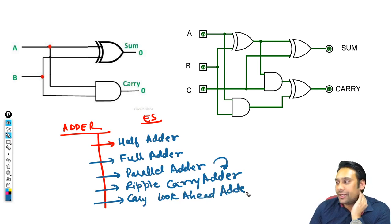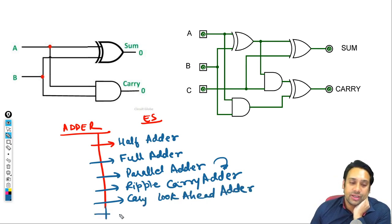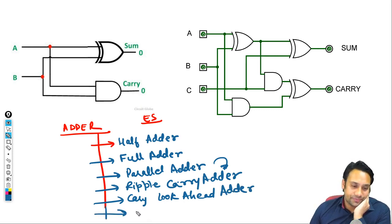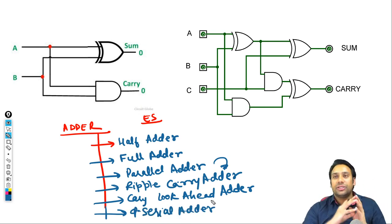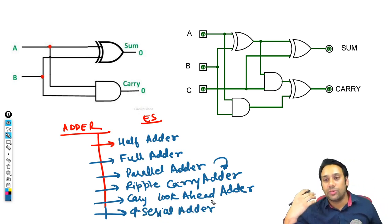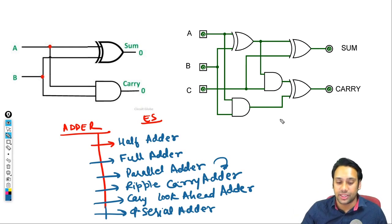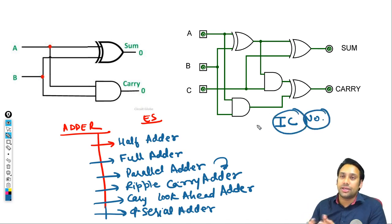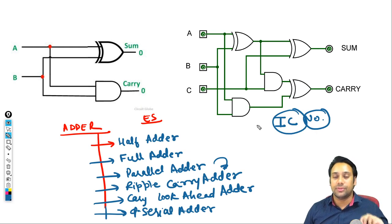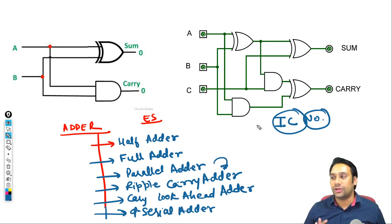We have studied and discussed all these adders. From the carry look-ahead adder, there is also a parallel serial adder and a serial adder. Basically, with digital components we give an IC number — there is something called an IC number for each of these digital circuits, so that if we need to use that functionality, we simply take the IC number and use it to perform that particular functionality.